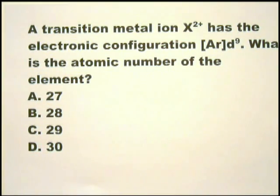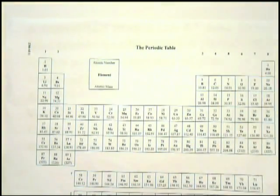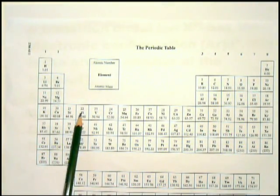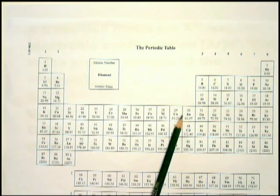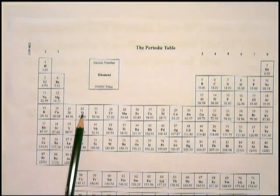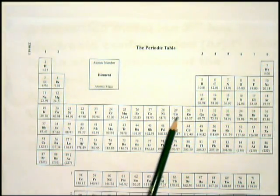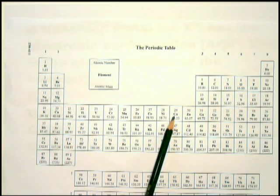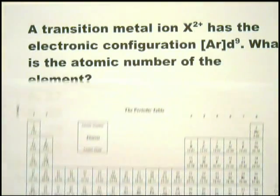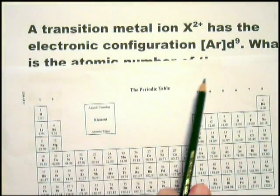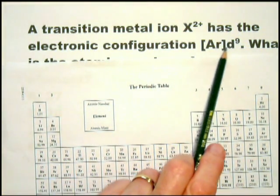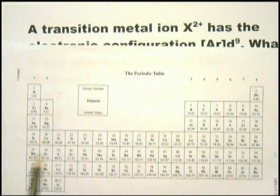Okay, this is about transition metal X2+. And therefore, you will know that if I show you a periodic table here, it's going to be one of these elements, usually from 22, atomic number 22, titanium, to atomic number 29, copper.